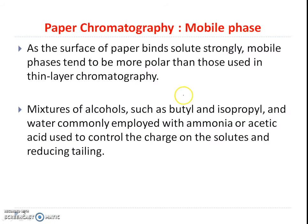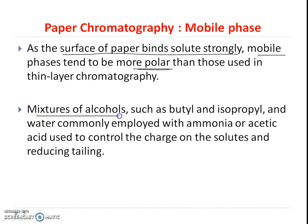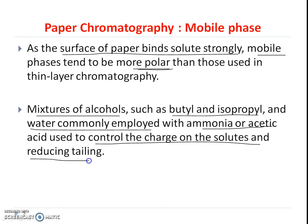The mobile phases used in paper chromatography — since the surface of paper binds solutes strongly — tend to be more polar than those used in TLC. Mostly mixtures of alcohols such as butanol or isopropanol and water are commonly employed, along with ammonia or acetic acid to control the charge on the solutes, which helps in the reduction of tailing.